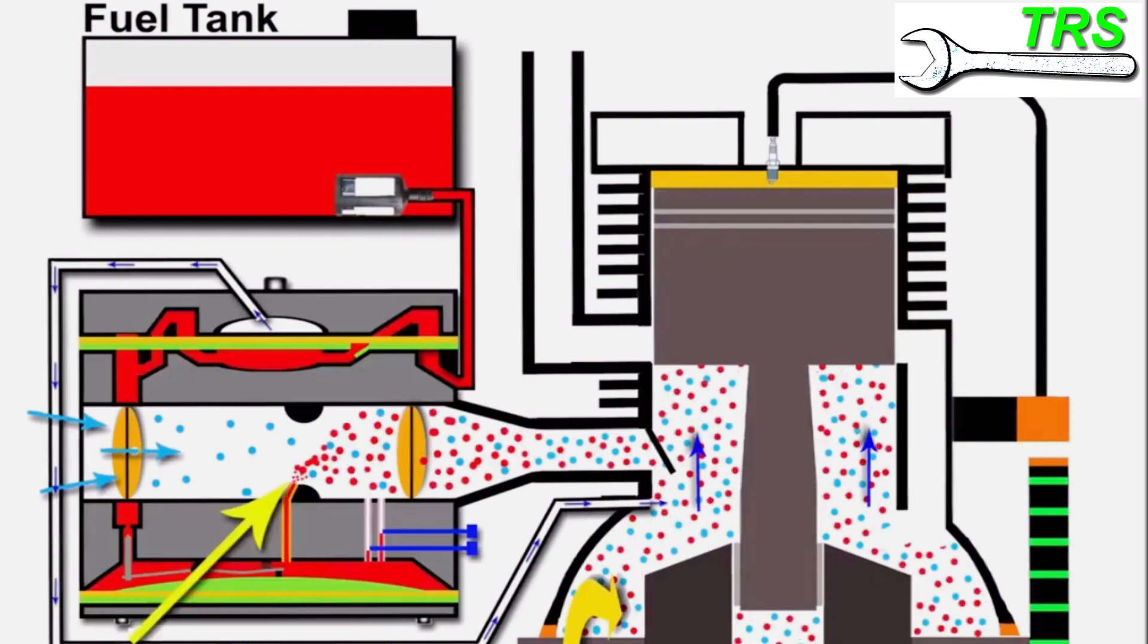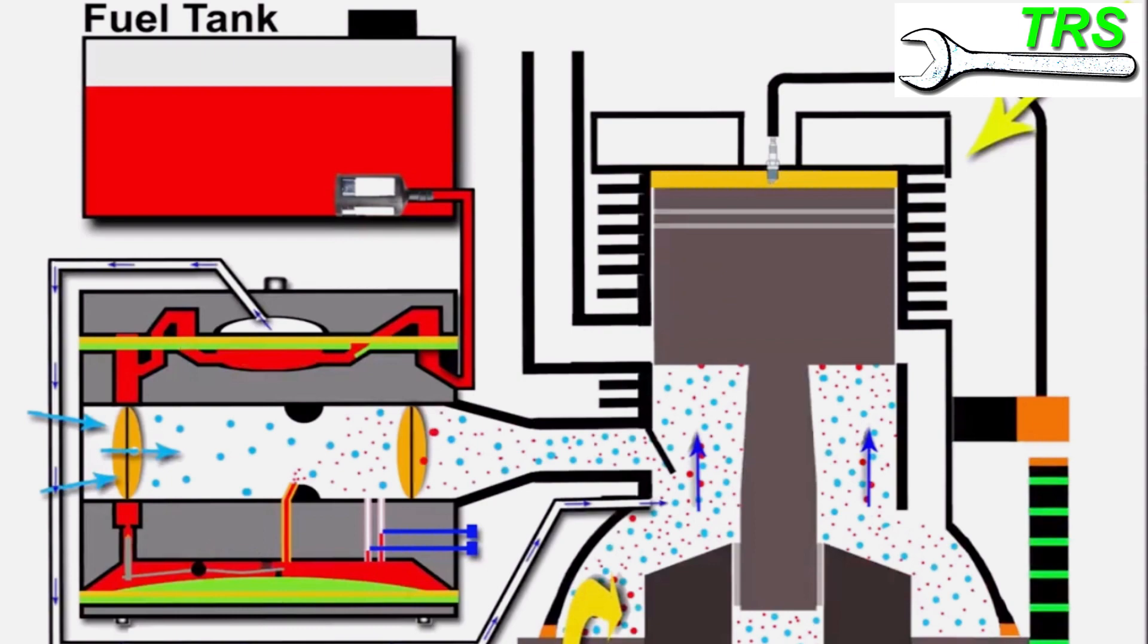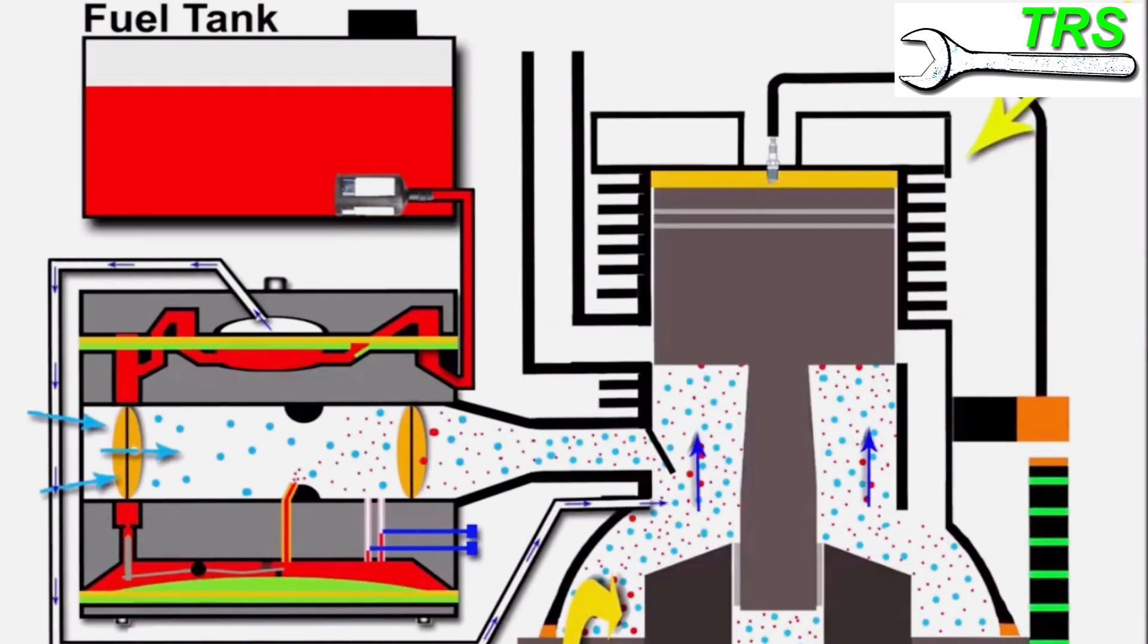We need a happy medium midway point between rich and lean. Too lean means overworking of the components and less lubrication there from the oil to support the overworking of those components. That is going to result in engine damage.